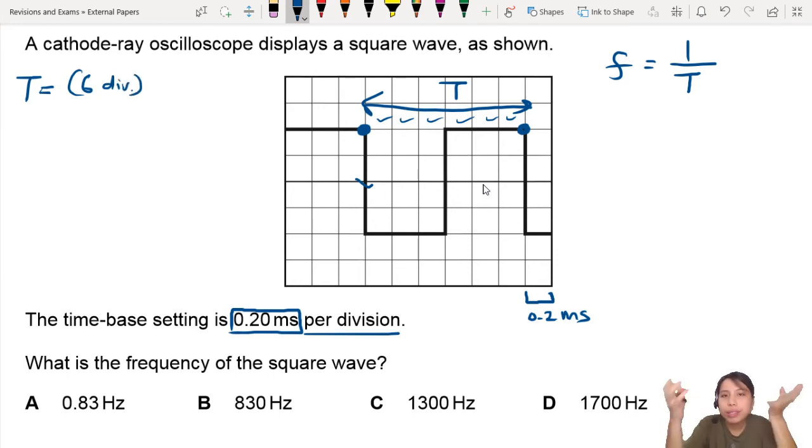But your period must be in seconds. So you need to convert it to seconds with your time-base setting. So that will be 0.2 milliseconds per division. This is how you can write it out to double-check. Division and division cancel out. So all you have is 1.2 milliseconds. That is your period.